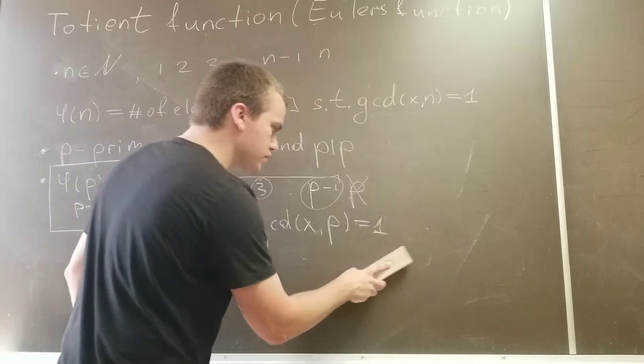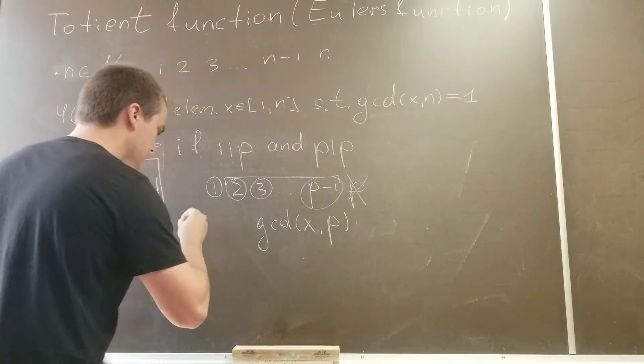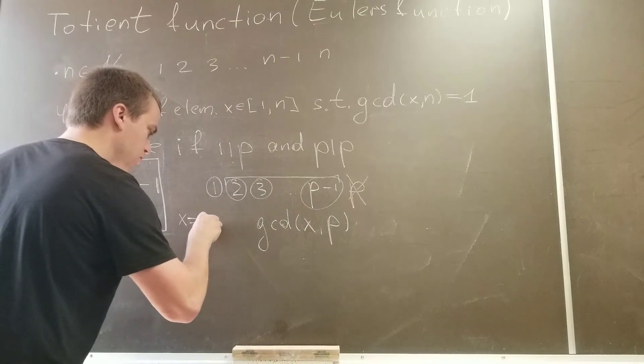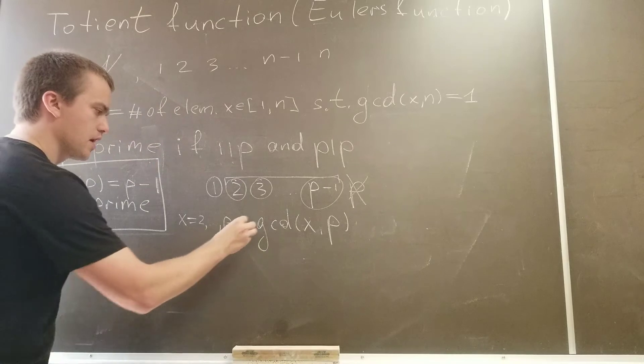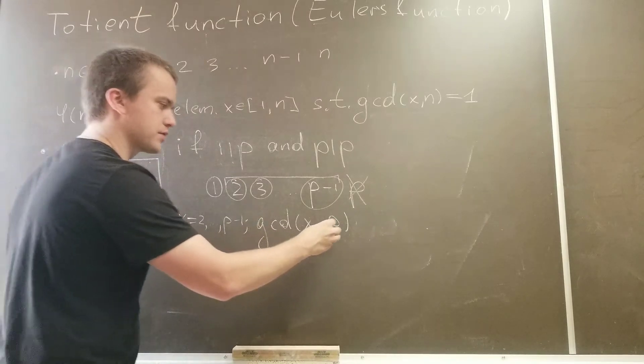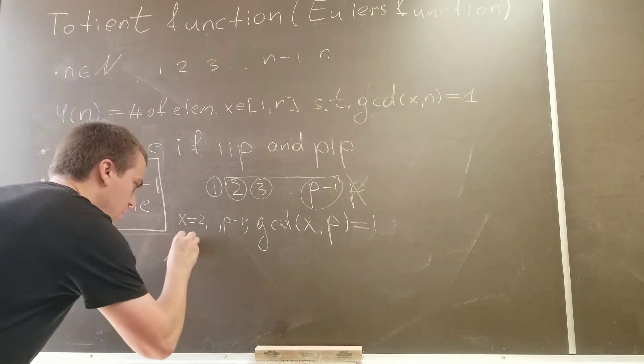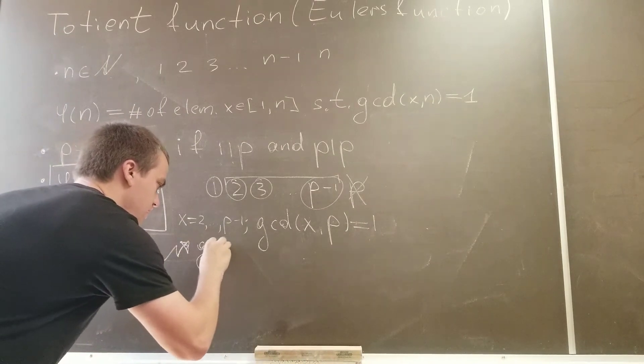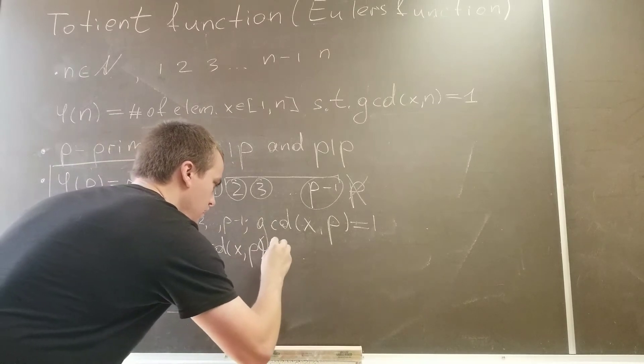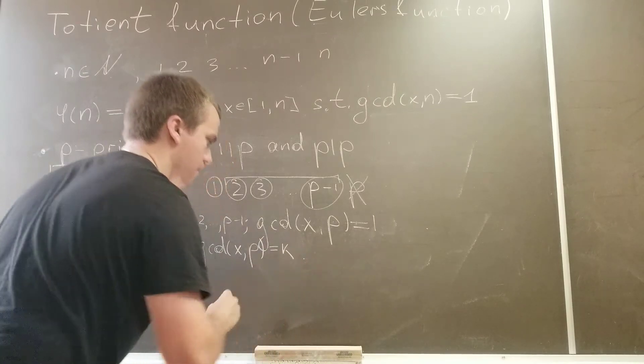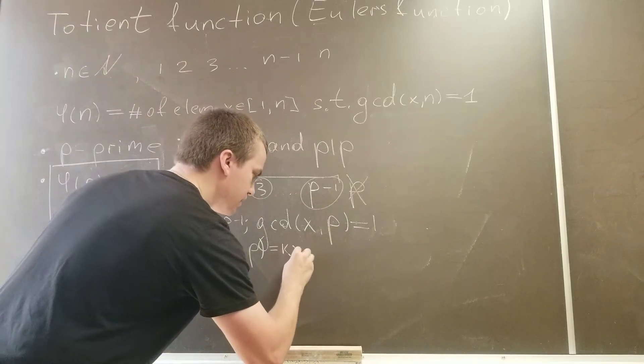So how are we going to do this? We're going to prove this by contradiction. Assume that x equals 2 to p minus 1, and we want to show that gcd of x and p equals to 1. So let's prove by contradiction. Assume that gcd of x and p equals to k, and k is bigger than 1.